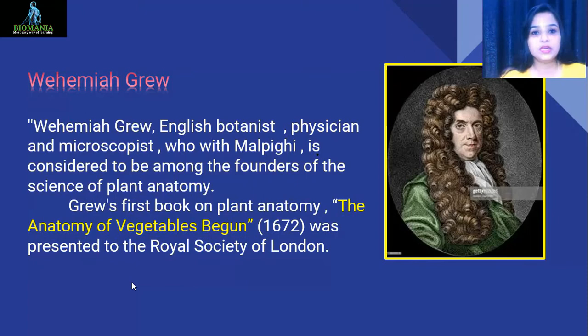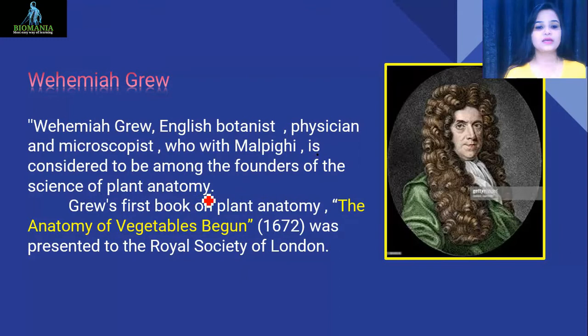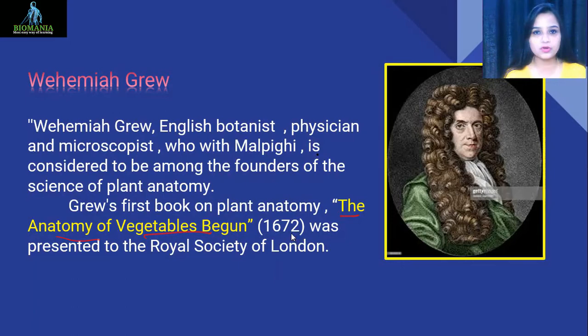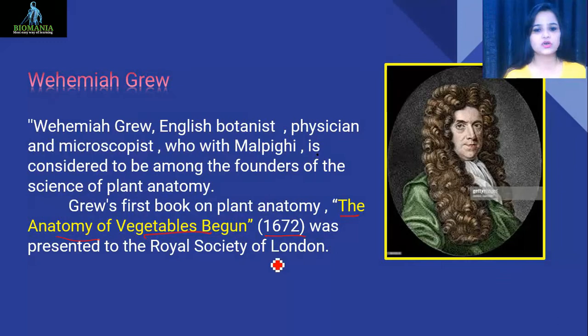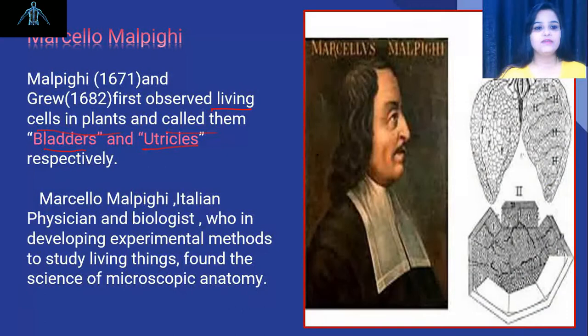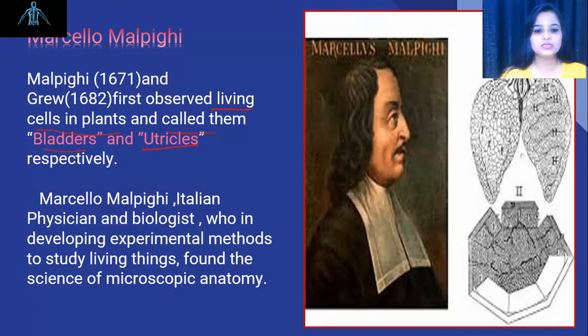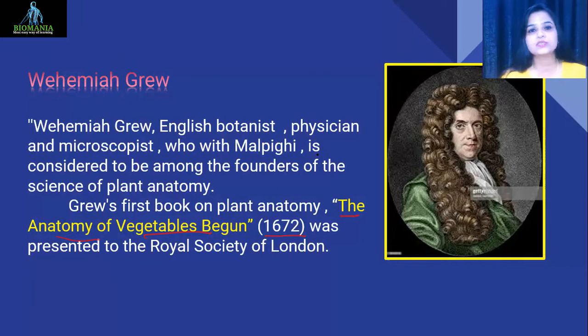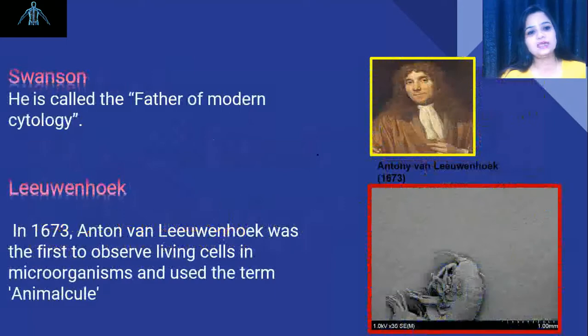Nehemiah Grew was an English botanist, physician, and microscopist who, along with Malpighi, is considered among the founders of the science of plant anatomy. Grew's first book on plant anatomy is The Anatomy of Vegetables Begun, from 1672, presented to the Royal Society of London. The key fact to remember is that Malpighi and Grew first observed living cells in plants, with years 1671 and 1682.